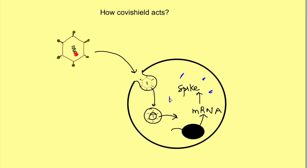Once these spike proteins are produced, some of them start appearing on the surface of the cell — the cell expresses them on its surface. It is like telling others that there is a foreign attack. So the foreign antigen starts appearing on the surface of the cell.